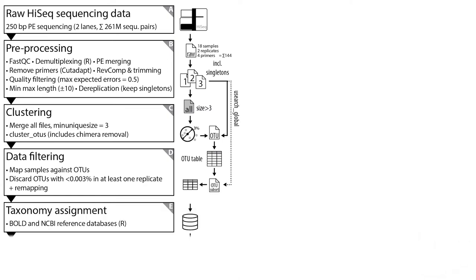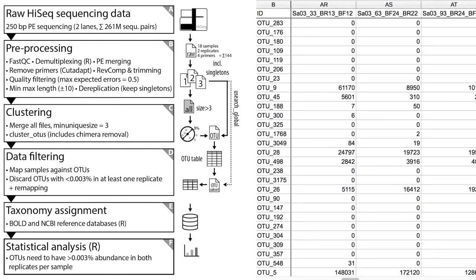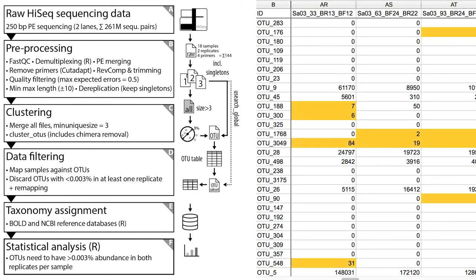Taxonomy was assigned using BOLD and NCBI reference databases, and the OTU table was used to compare the performance of DNA metabarcoding with morphology-based identifications. For statistical analysis, we only retained OTUs with above 0.003% abundance in both replicates; if the abundance was below this threshold, those values were set to zero, and highlighted in the table.